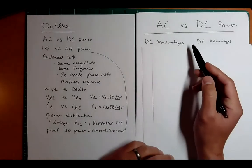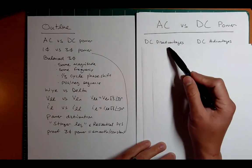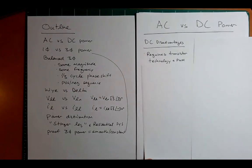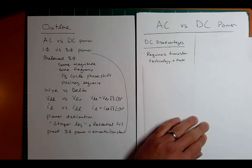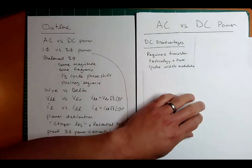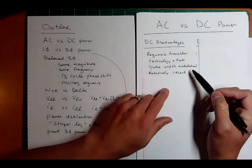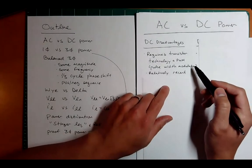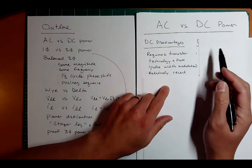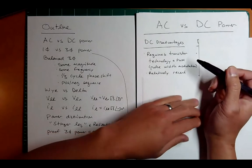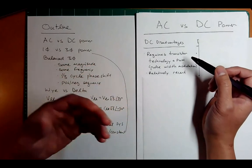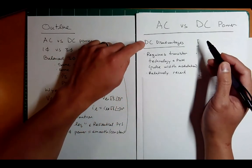Let's compare some advantages and disadvantages between AC and DC. Looking at disadvantages of DC first: it requires transistor technology, and back in the day this was not available because transistor technology is actually relatively recent. Now that we have it, we've got wonderful things like cell phones, TVs, radios, and the internet. But before they had it, they couldn't quite take advantage of DC.